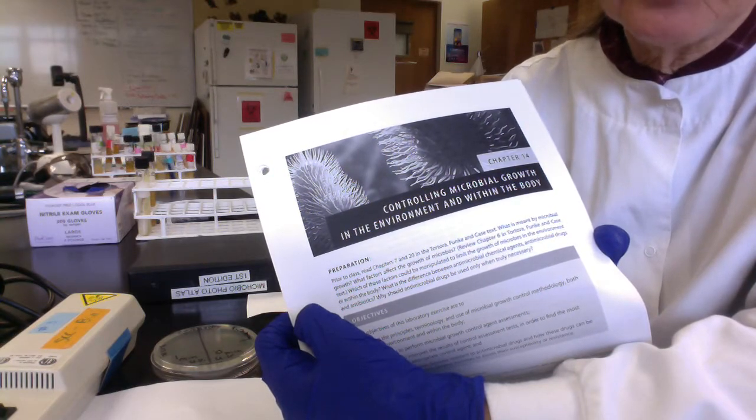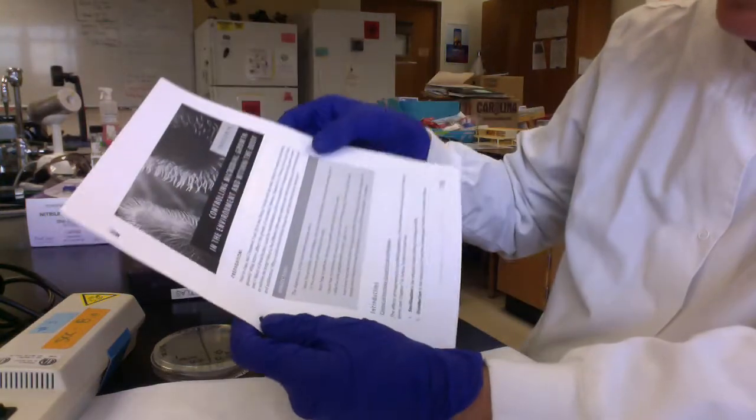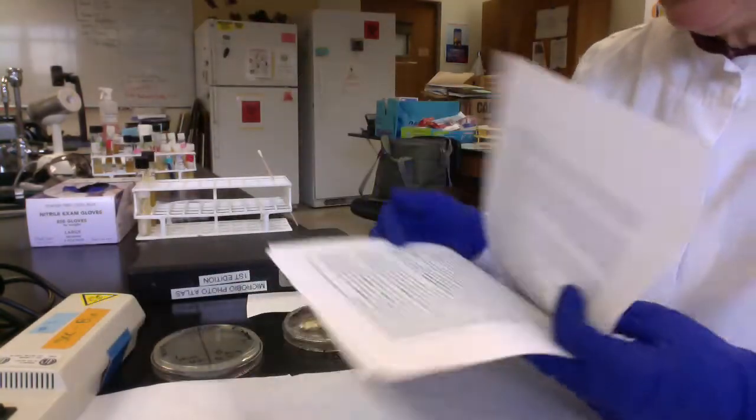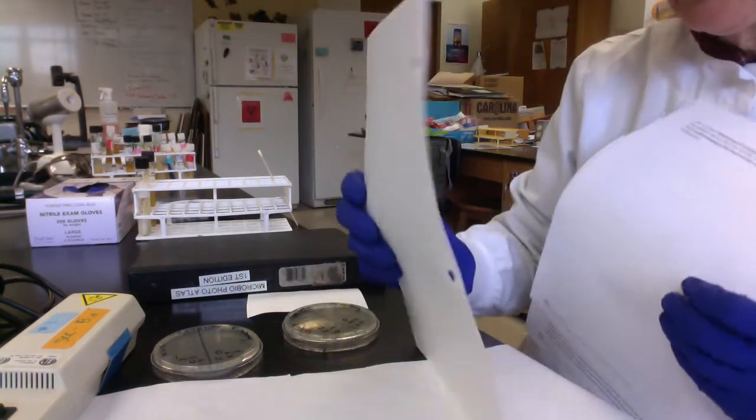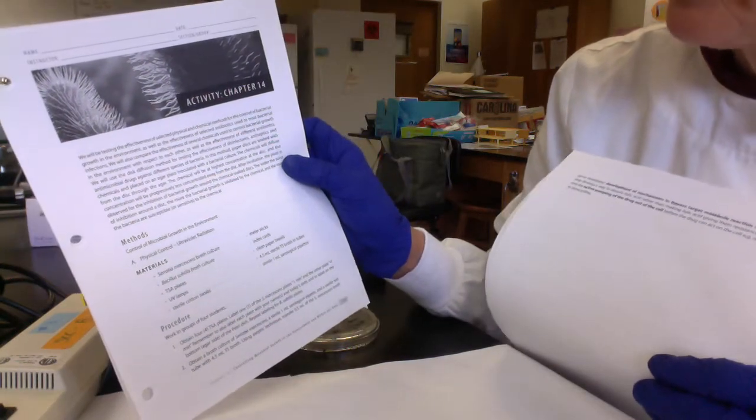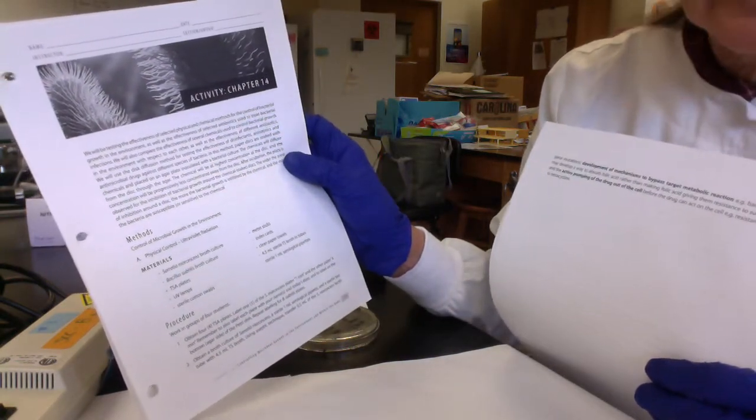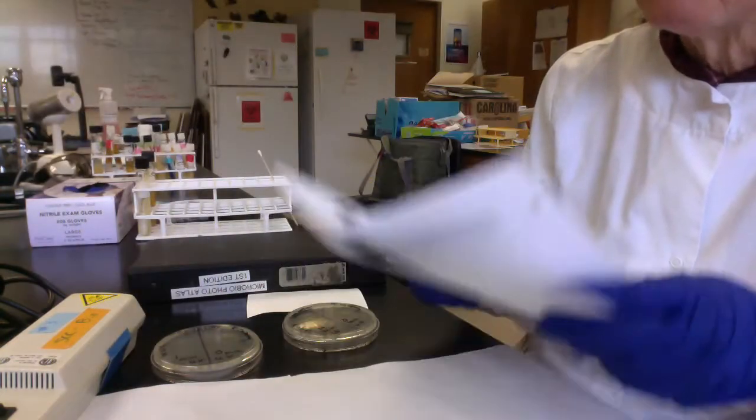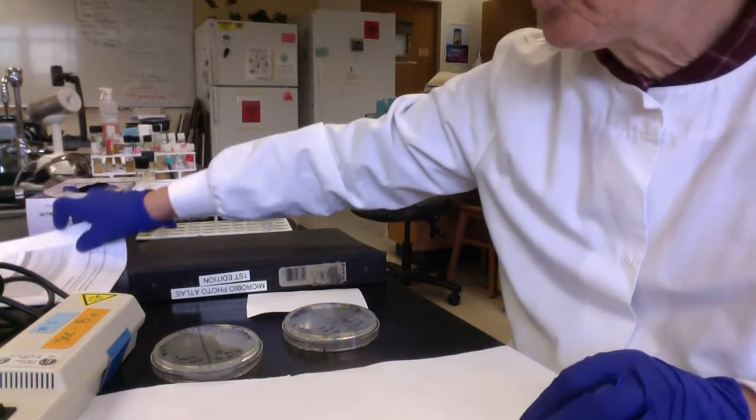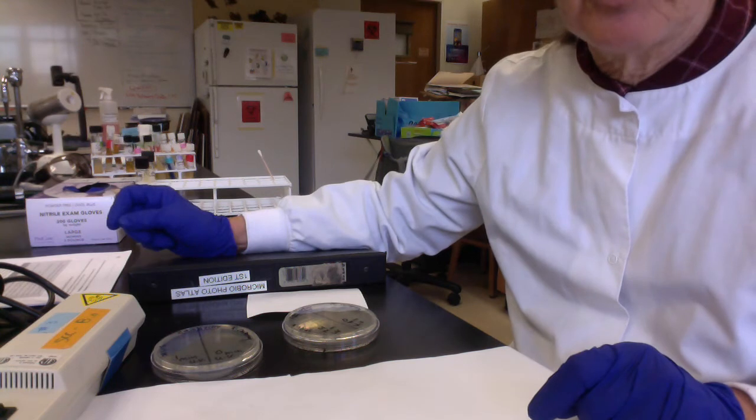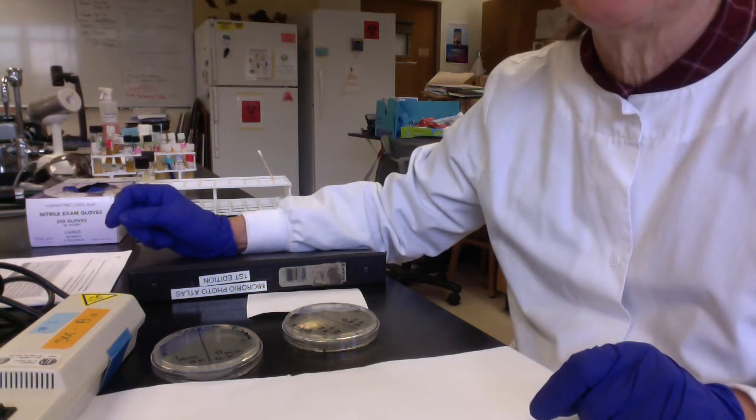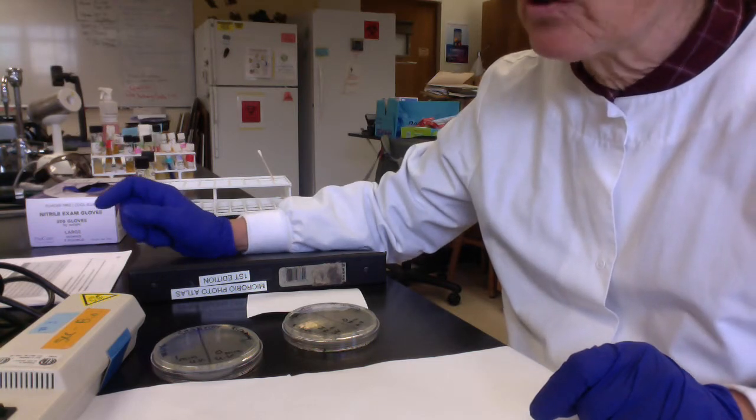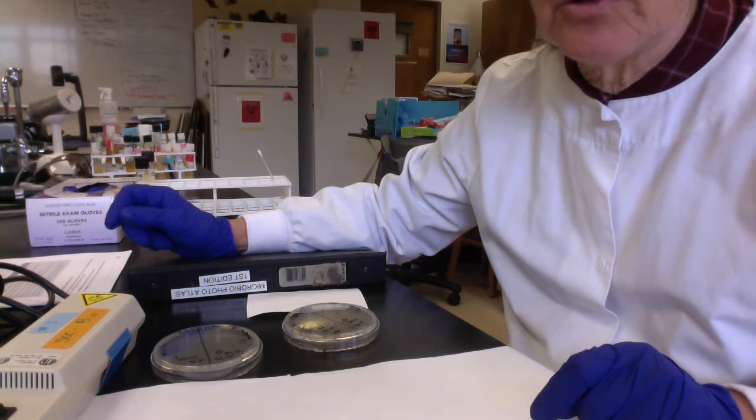We're going to do the UV irradiation experiment, described on page 159. This is using ultraviolet radiation to kill bacteria. I'm going to have you refer to our lecture PowerPoint, the microbial genetics part 2, the section on mutations. In that section, we describe what kind of damage short wavelength UV irradiation causes. By short wavelength, I mean about 254 to 260 nanometers.